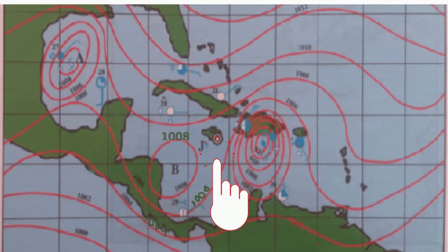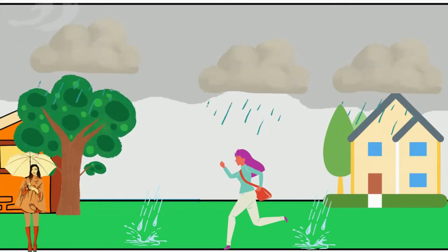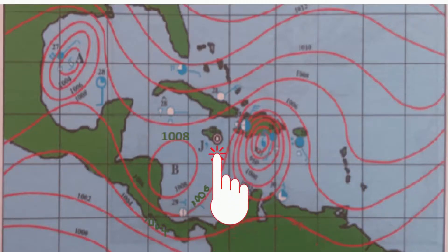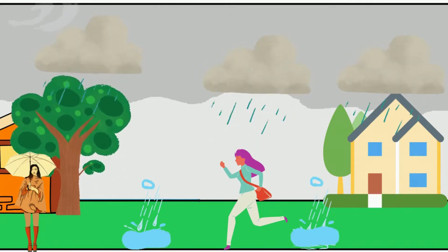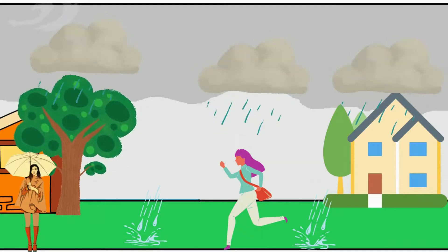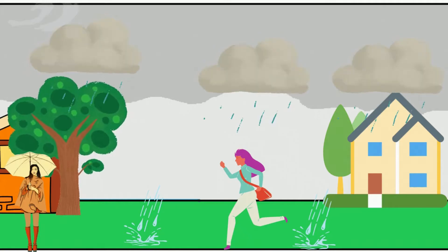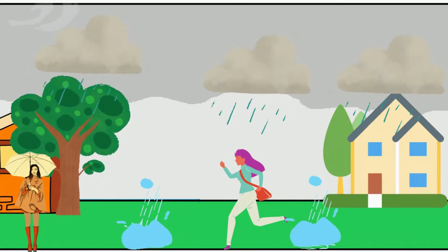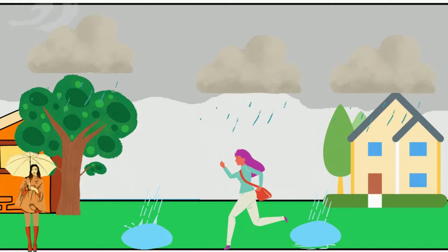As the hurricane approaches, wind speeds begin to increase rapidly. A great deal of low black clouds build up, bringing showers of rain. On this side of the hurricane, winds are blowing from the north. People are now experiencing the rain bands of the hurricane.